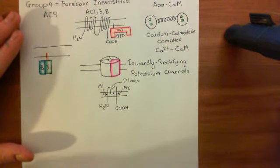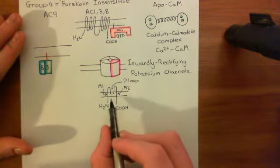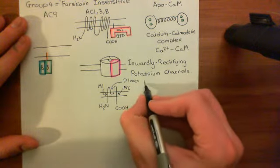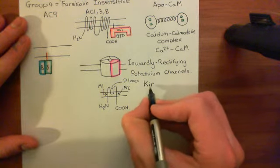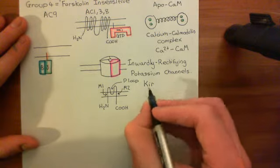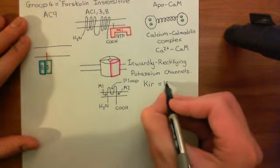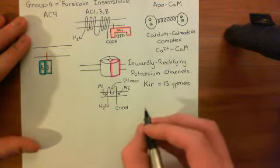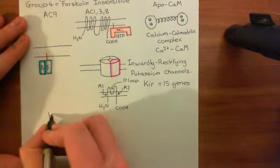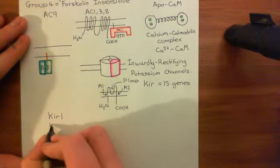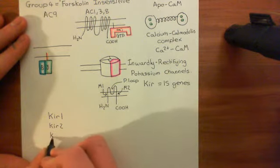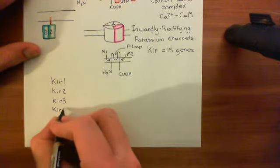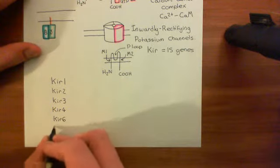How many different genes code for these subunits of inwardly rectifying potassium channels? There are quite a lot. They are abbreviated to KIRs — potassium channel inwardly rectifying. There are actually 15 different genes for inwardly rectifying potassium channel subunits, grouped into seven different families: KIR1, KIR2, KIR3, KIR4, KIR5, KIR6, and KIR7.